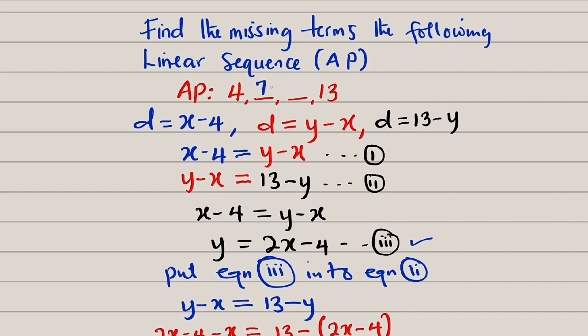If you like, you can find the constant common difference to see whether this sequence is really true or not. 7 minus 4 is 3. 10 minus 7 is 3. 13 minus 10 is also equal to 3. This means that this is a linear sequence because we have a constant common difference.